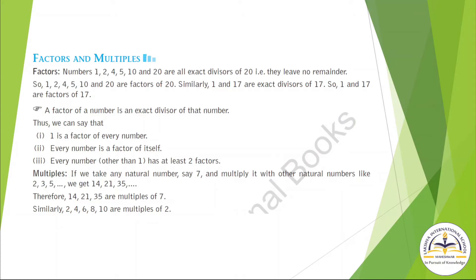Now we can say: first, 1 is a factor of every number — 1 is a factor of each and every number. Second, every number is a factor of itself. Third, every number has at least 2 factors.